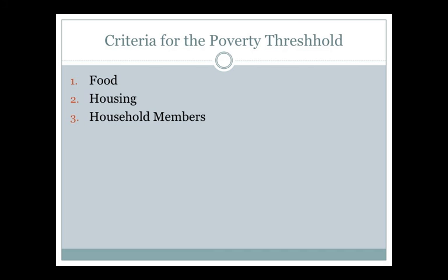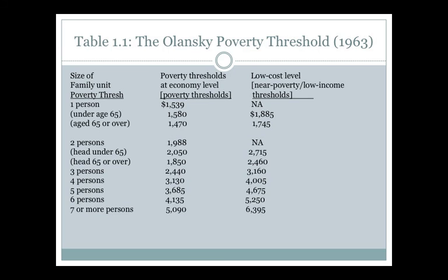The poverty threshold was first introduced in 1963. Looking at the 1963 table, the left-hand column shows the size of the family unit, and you can see whether they are under or over the age of 65, which makes a difference because those over 65 receive Social Security benefits, which offsets the cost. In 1963, the poverty threshold for one person was $1,539. If that person was under 65, it was set a little higher, and if they were over 65, a little lower.